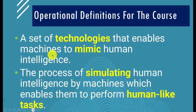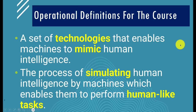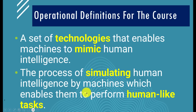Here are my two operational definitions for the course. First: AI is a set of technologies that enables machines to mimic human intelligence. Second: AI is the process of simulating human intelligence by machines, which enables them to perform human-like tasks. Both definitions derive from those key features highlighted in yellow.